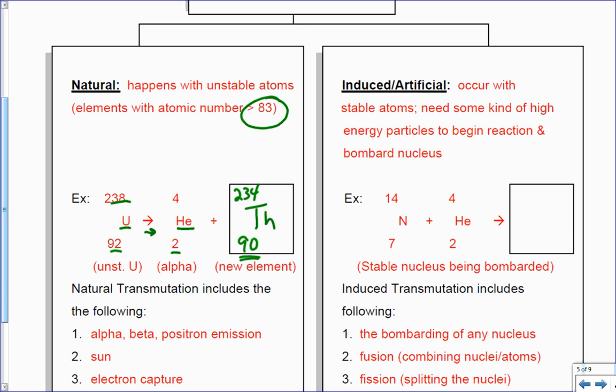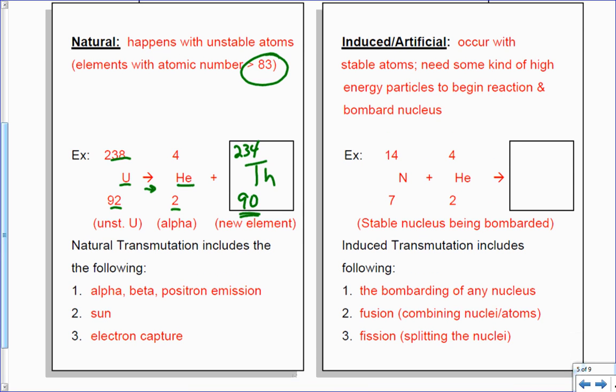Now this particular form of decay is called alpha decay. There's also beta decay, positron emission - we're going to learn about those three coming up. In the sun we do fusion, and then there's also electron capture. Those are the ways that we do natural transmutation.